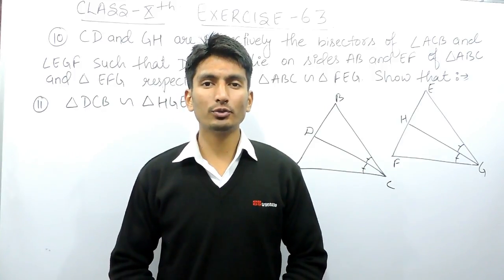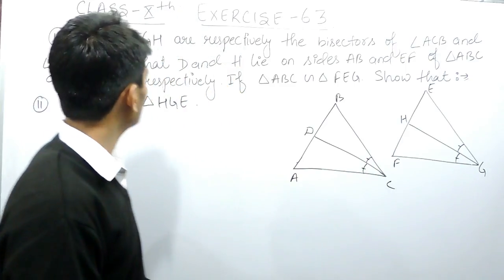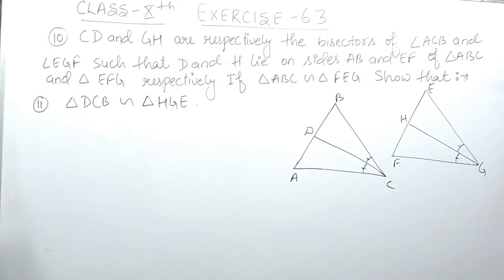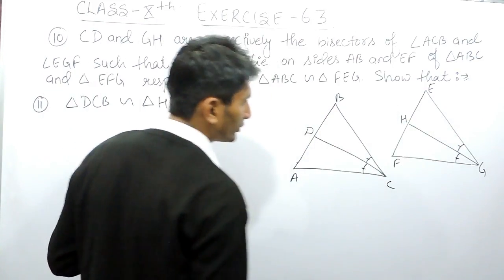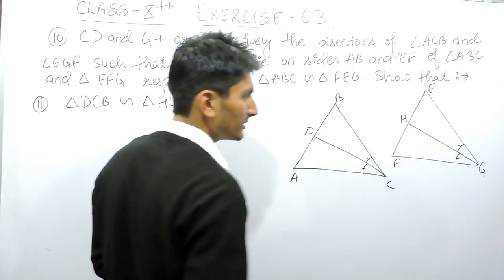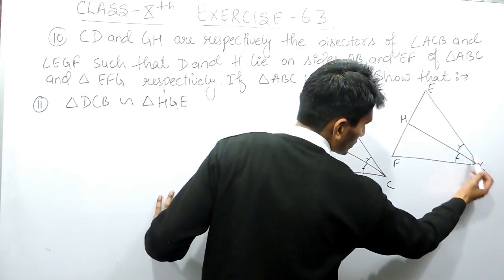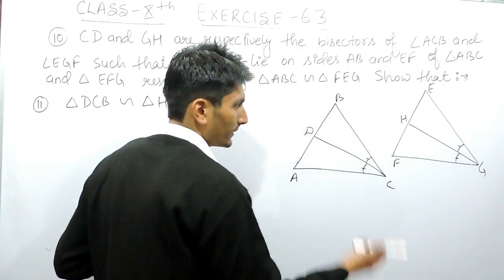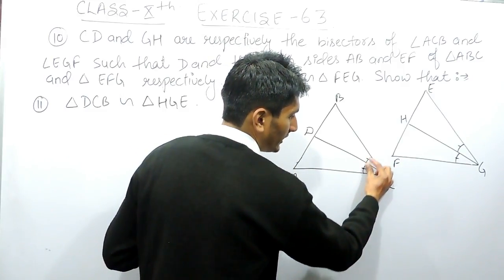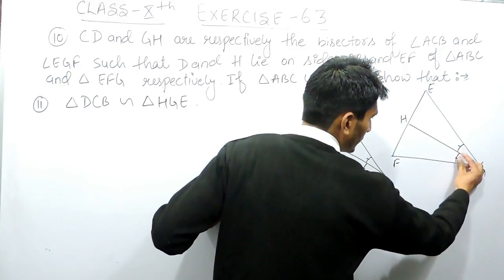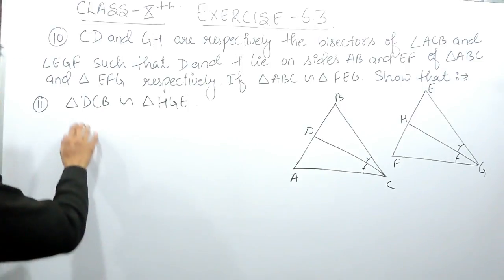Hello everyone, we are from True Maths and in this video we are going to solve the second part of question number 10. In this, a triangle ABC and EFG is given, and these two triangles are similar. Here DC is the angle bisector of angle C, and GH is the angle bisector of angle G. The angle bisector means this line is dividing this angle into two equal parts — here also this line is dividing angle G into two equal parts.